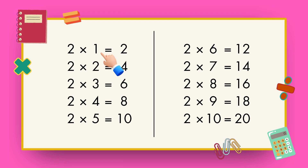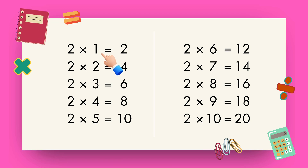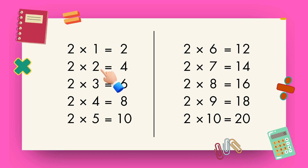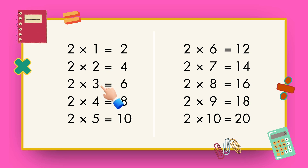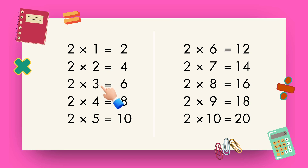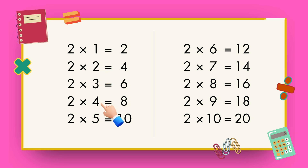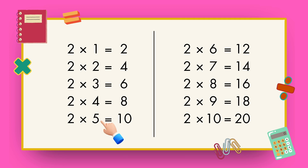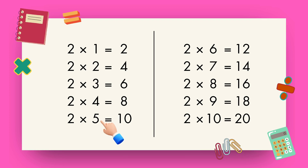2 1s are 2, 2 2s are 4, 2 3s are 6, 2 4s are 8, 2 5s are 10.